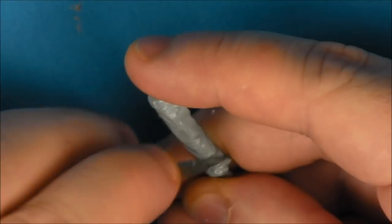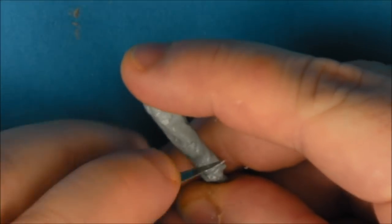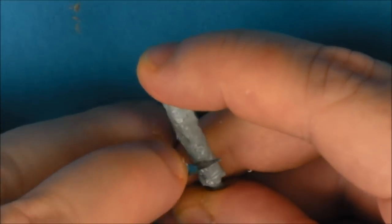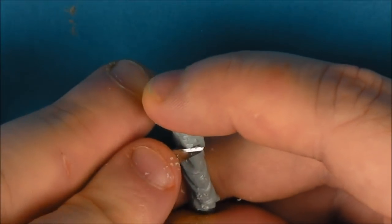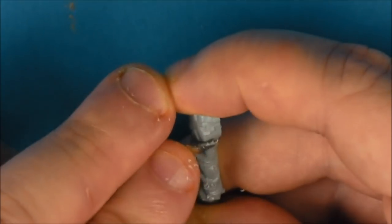Once you've cut them off the sprues, we're going to start removing the seam lines. The seam lines are a byproduct of the molding process and they run the entire length of each piece. I'm just using a hobby blade here. Some people use the back of hobby blades but I just use a fresh blade.